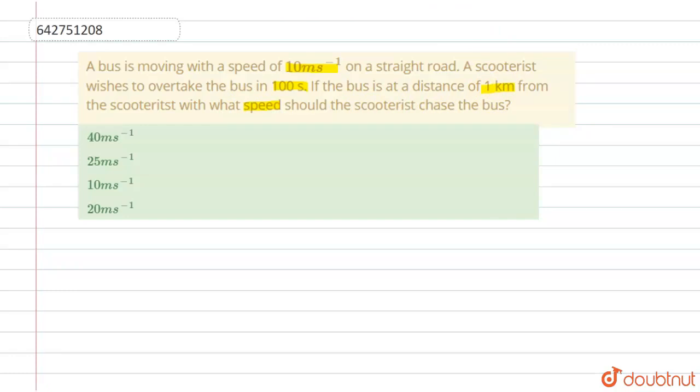First of all, let's write the given data. Time t equals 100 seconds, and distance D equals 1 kilometer, which equals 1000 meters.